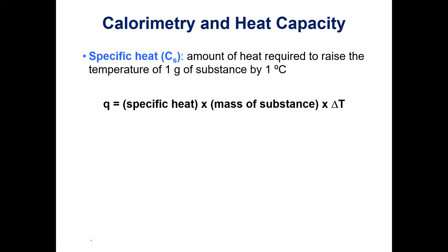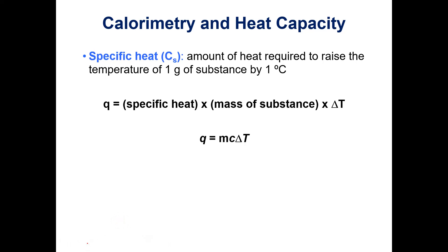More commonly, what we use is the specific heat of a substance. The specific heat refers to the amount of heat required to raise the temperature of one gram of a substance by one degree Celsius. We can represent that as Q equals the specific heat times the mass times the change in temperature — or more compactly, Q equals mcΔT, where m is mass, C is specific heat, and ΔT is the final temperature minus the initial temperature.